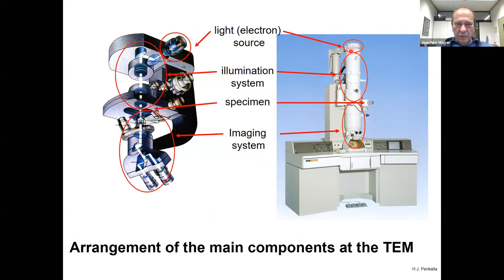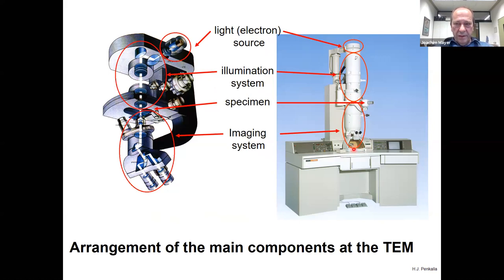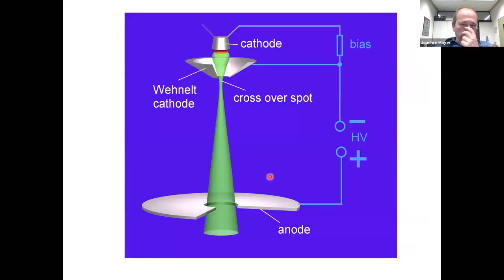In the TEM, the electron source is always at the top, so you have to turn the light microscope upside down. Rather than a light source, we have an electron source. In geometrical optics we have an illumination system — the electron beam is guided to the specimen. We always use thin specimens in transmission, and then an imaging system produces a magnified image. This is how we build an electron microscope in geometrical optics. The question becomes how we form an electron source and how we form lenses.